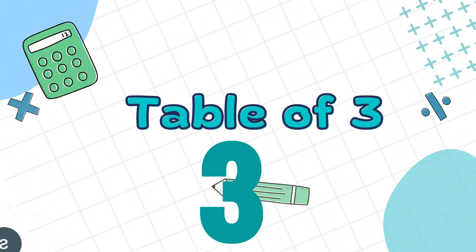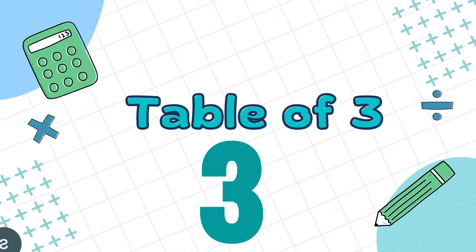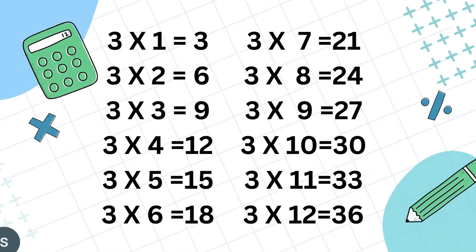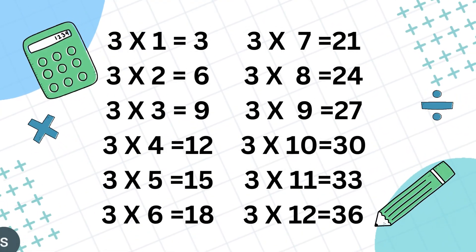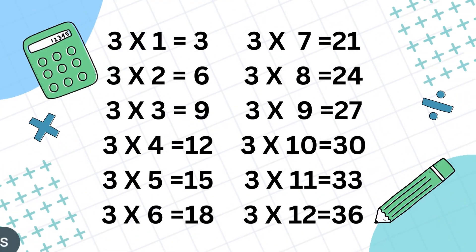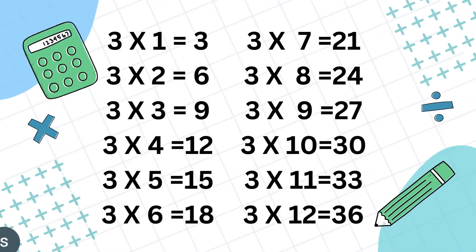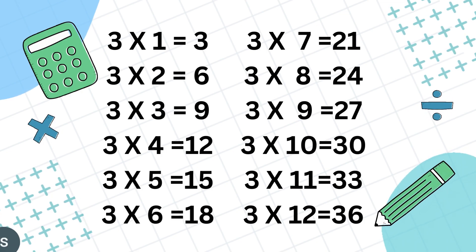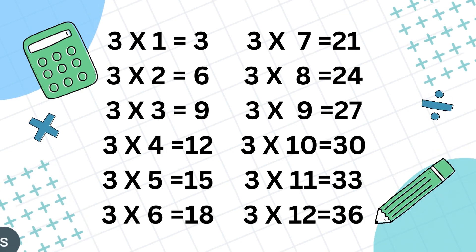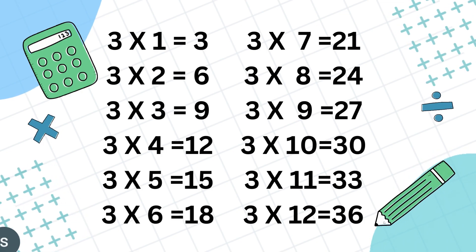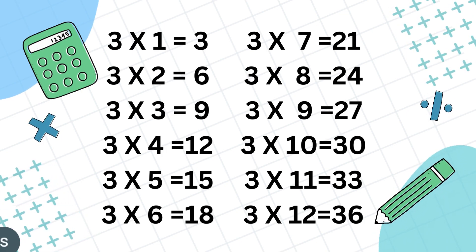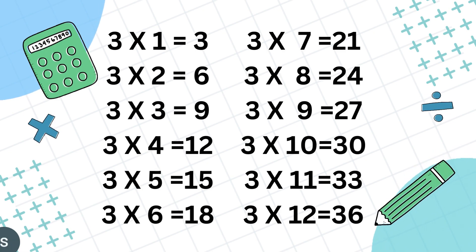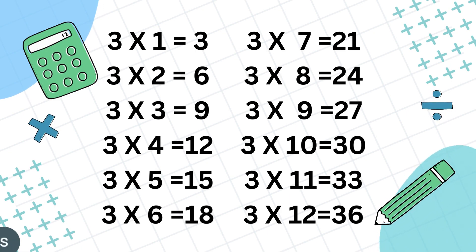Table of 3. 3 1's are 3, 3 2's are 6, 3 3's are 9, 3 4's are 12, 3 5's are 15, 3 6's are 18.